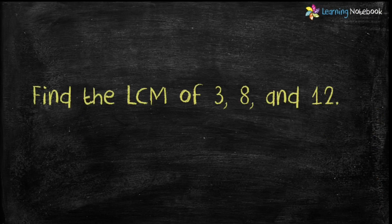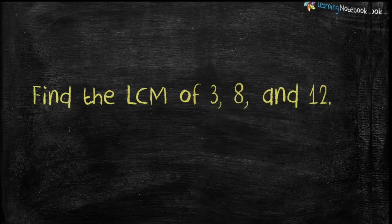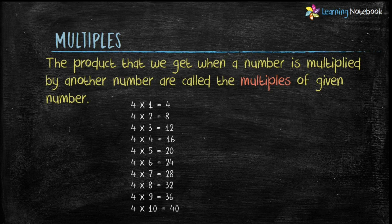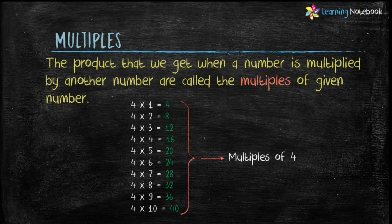The question is to find the LCM of 3, 8, and 12. Before starting with the activity, let's first revise what are multiples. The products that we get when a number is multiplied by another number are called the multiples of a given number. For example, in the table of 4, the numbers 4, 8, 12, 16, and so on are multiples of 4.